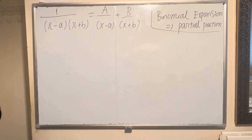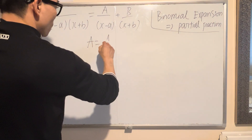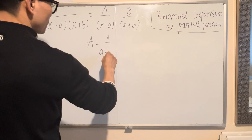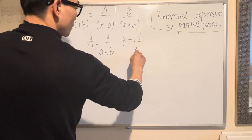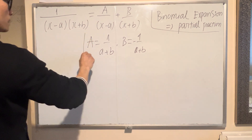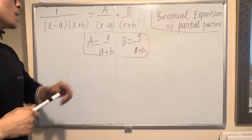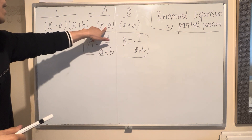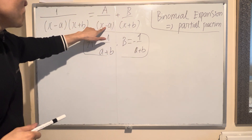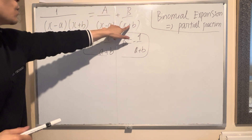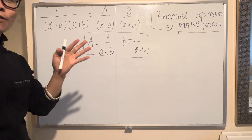Now I show you how to find A and B very quickly. A equals 1 over (0 plus b). B is always opposite to A, so negative 1 over (a plus b). If you put negative here, B is negative. So B follows the sign of its factor and A follows the sign of its factor — they are always opposite.